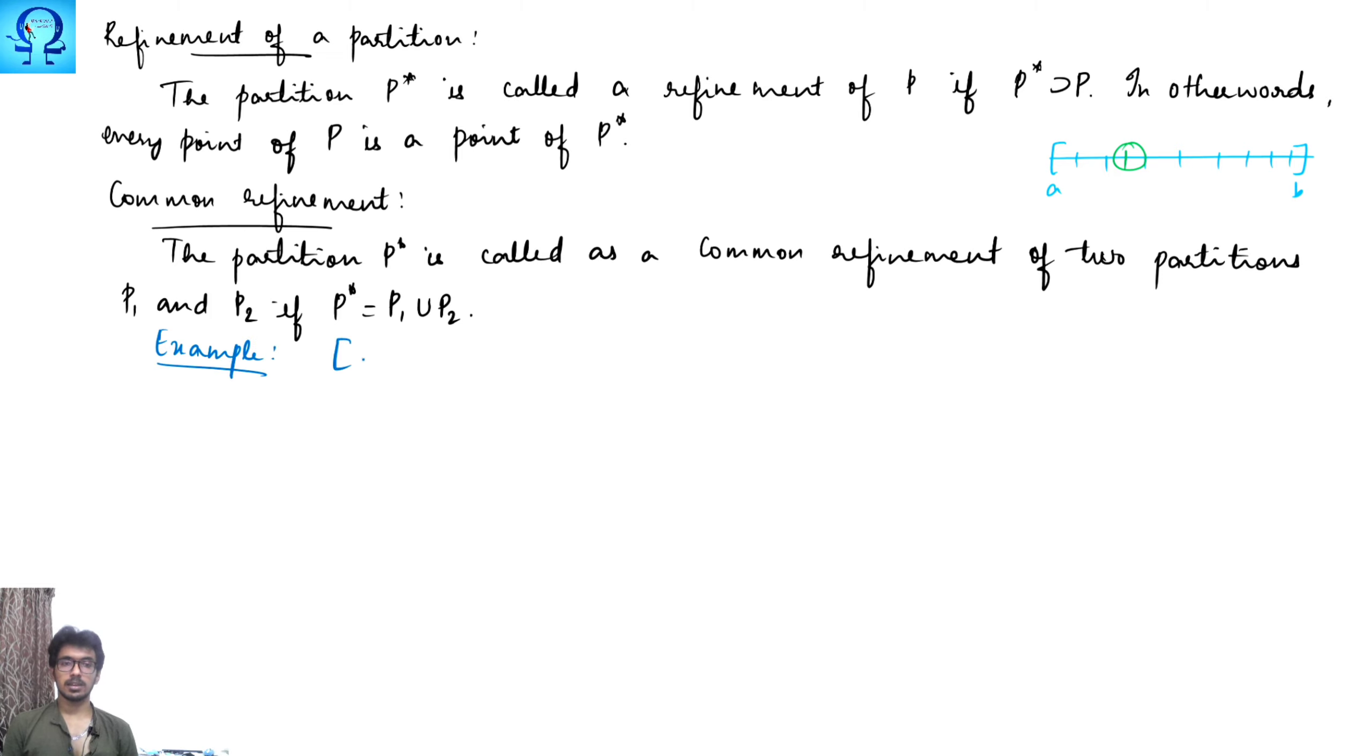Let us go with some examples that would be better to understand these things. Let us consider the interval 0 comma 1. Let my partition P1 be 0, 0.25, 0.5, 0.75 and 1. Let me choose P2 to be 0, 0.5, 1 and P3 to be 0, 0.25, 0.75, 1.